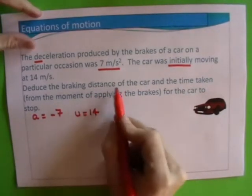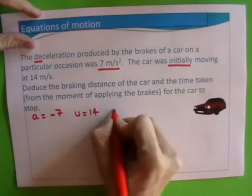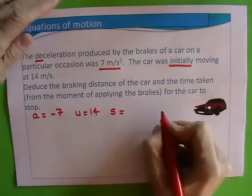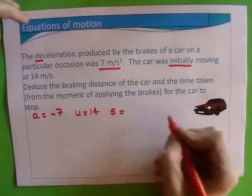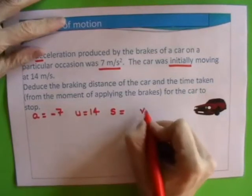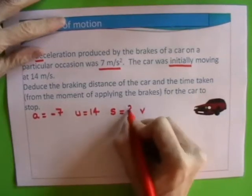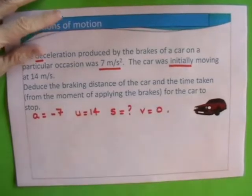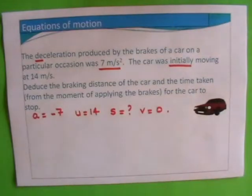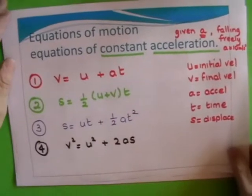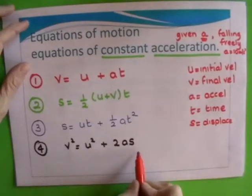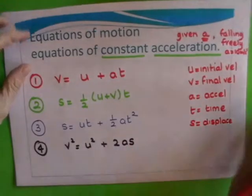Deduce the braking distance of the car, so we're looking for a displacement. For the car to stop, that means its final velocity is equal to zero. So we've got a, u, s, and v. If we look back at our equations to see which equation has got s, u, a, and v in it, you can see that it's the last one here, so we need to use our last equation.